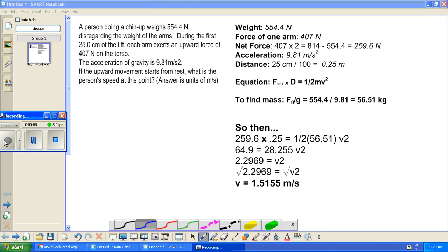each arm exerts an upward force of 407 newtons on the torso. The acceleration of gravity is 9.81 meters per second squared. If the upper movement starts from rest, what is the person's speed at this point? The answer should be in meters per second.